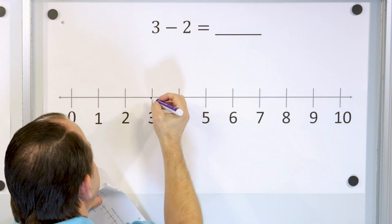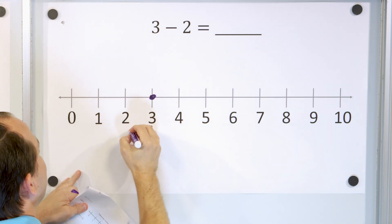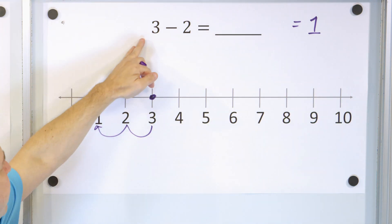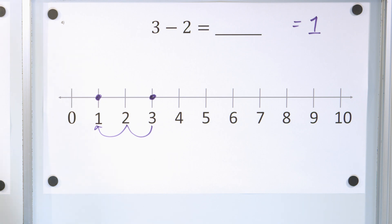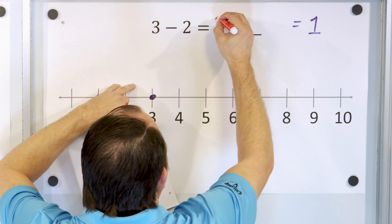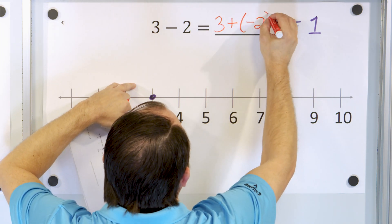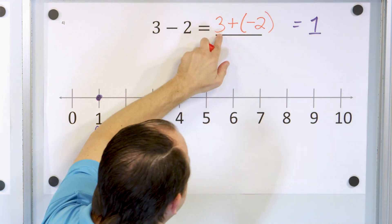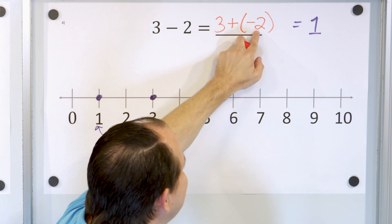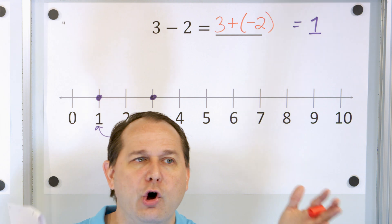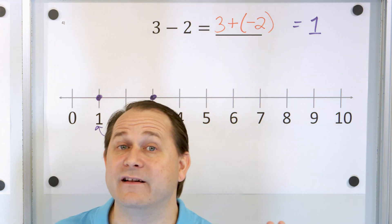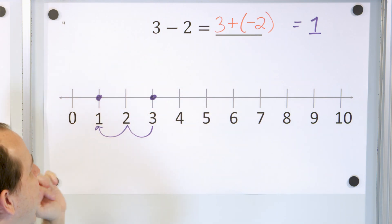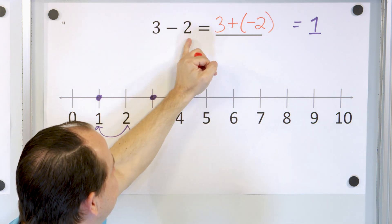Problem three: three minus two. On the number line, I start with three dollars and go down by two — one position, two positions — landing on an answer of one. I know the answer is one dollar. But we want to rewrite it: this subtraction can be rewritten as addition of the opposite, which is negative two. When you have three plus negative two, it's the same exact thing as three minus two. I start with three dollars, add to it debt — I borrow two dollars from the bank — so my total worth is only one dollar. As soon as I pay that debt, I only actually have one dollar.